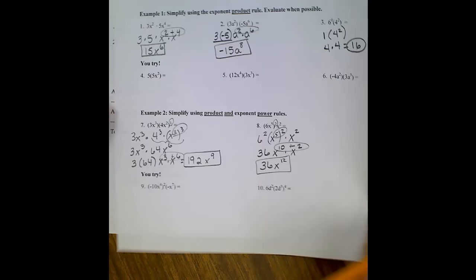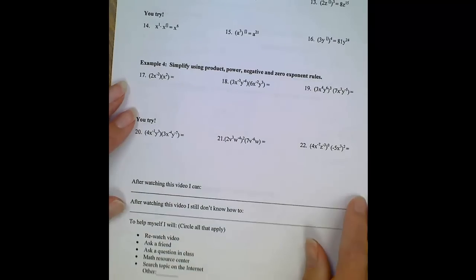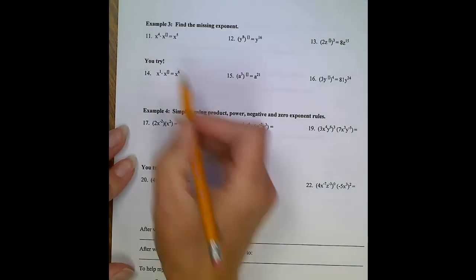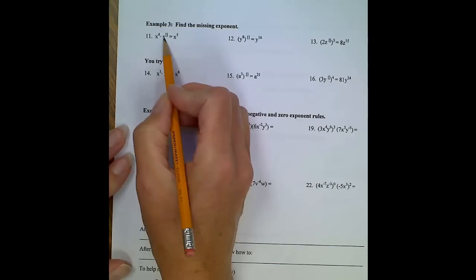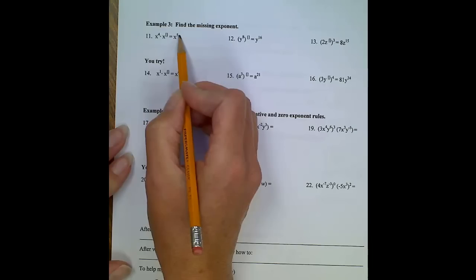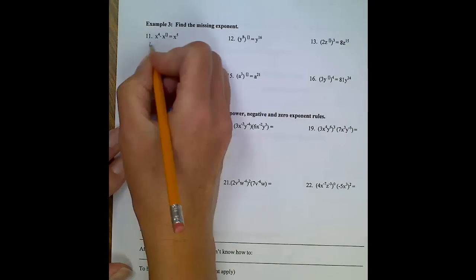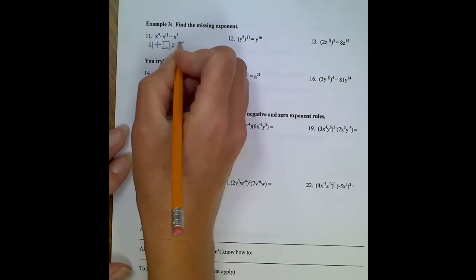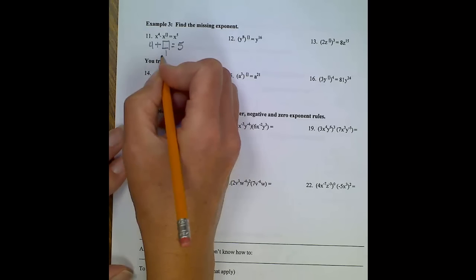Page 2. Example number 3, number 11. What they want to check for here is to see if you really understand these rules, and you can apply them. Number 11: when you're multiplying two terms together, you typically add the exponents and come up with a solution. In this instance, they gave us the solution. We just have to figure out the missing variable. So this one's not too bad. 4 plus some missing value equals 5. Our missing value here, obviously, would be 1.